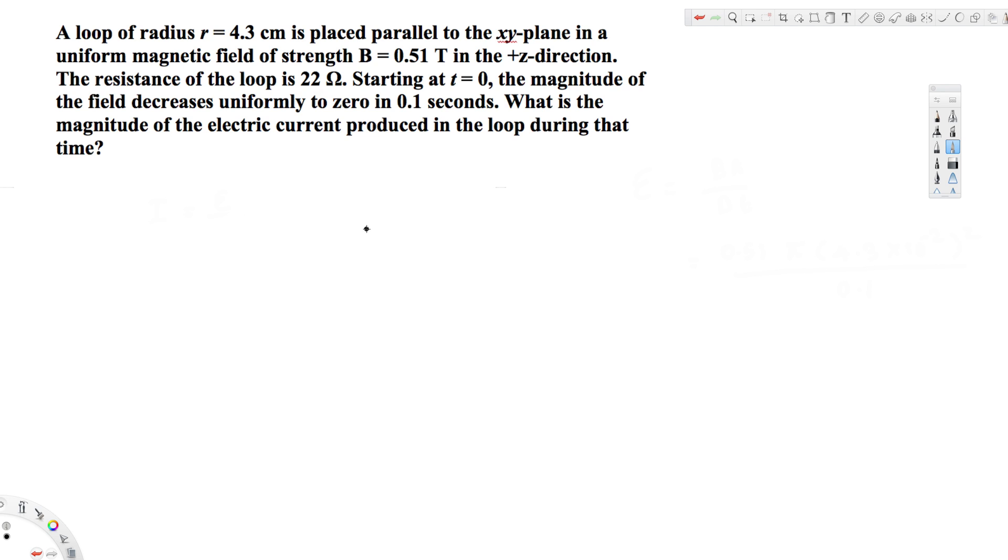= 0.51 tesla in the positive z direction. The resistance of the loop is 22 ohms. Starting at t = 0, the magnitude of the field decreases uniformly to zero in 0.1 seconds. What is the